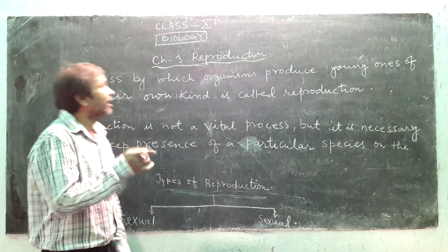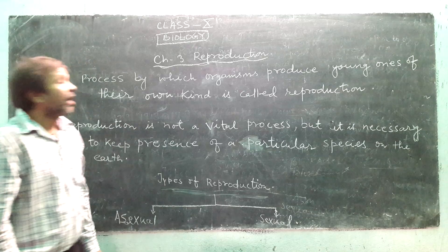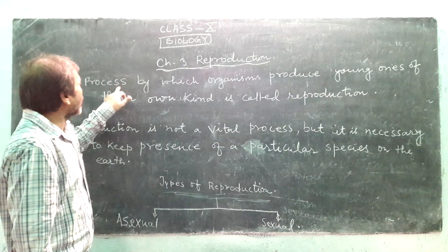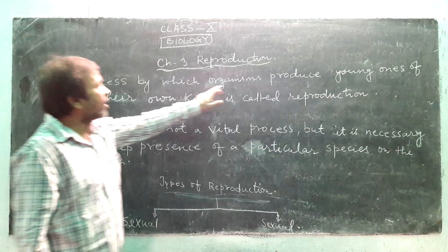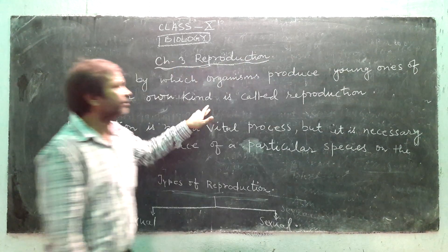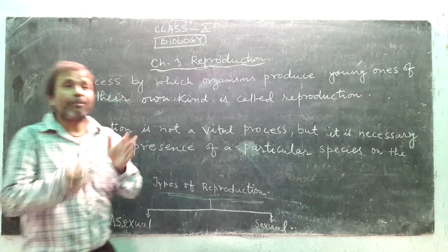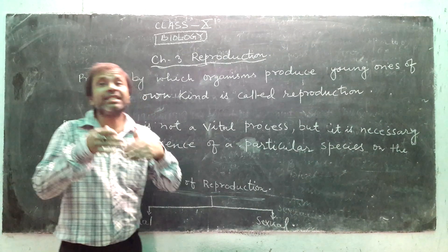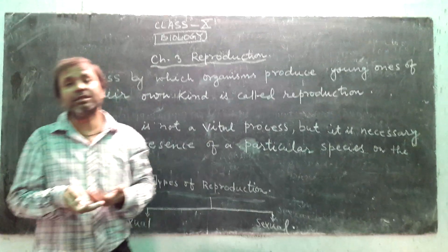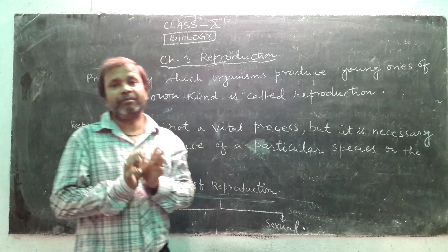Today we are going to start a new chapter: Reproduction. Reproduction can be defined as the process by which organisms produce young ones of their own kind. Reproduction means the process by which organisms can give birth to their young ones of their own kind.